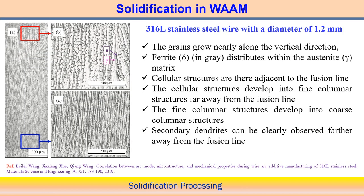Here we pick up two different types of materials to understand what kind of microstructure is usually formed after solidification in wire arc additive manufacturing. First, a stainless steel wire is deposited using WAAM with a wire diameter of 1.2 mm.